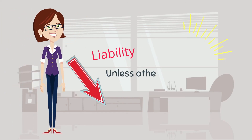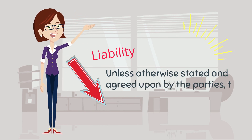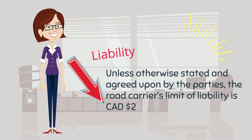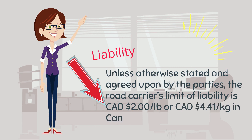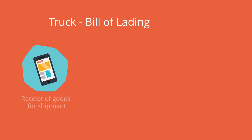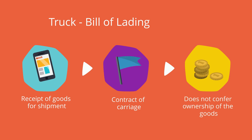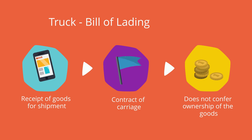Something else to consider is liability. Unless otherwise stated, a road carrier's limit of liability is $2 CAD per pound or $4.41 CAD per kilo in Canada. All truck shipments in Canada must move on a truck bill of lading. There is no real uniformity in a truck bill of lading; however, one bill of lading is required for each shipment. A truck bill of lading functions as a receipt of goods for shipment and a contract of carriage, but it does not confer title of ownership of the goods.